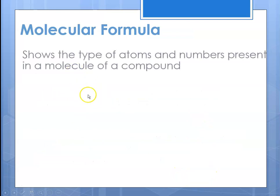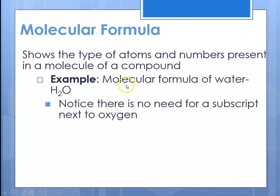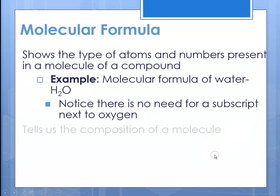The molecular formula shows the type of atoms and the numbers present in a molecule. An example would be the molecular formula of water, which is covalently bonded. The formula for water is H2O. Notice hydrogen has a subscript because there are two of them. Oxygen does not have a subscript because there's only one — when there's only one, we do not use a subscript. One is understood.